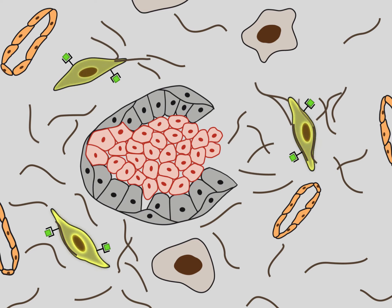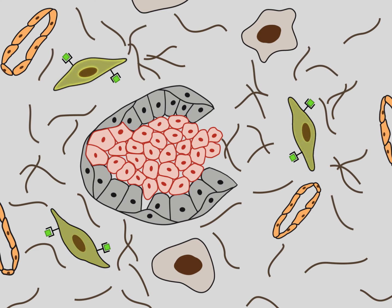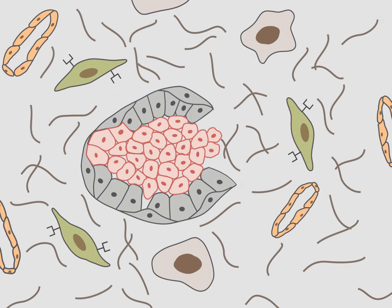Through the stroma run blood vessels that supply the tumor with oxygen and nutrients. TGF-beta also stimulates the release of metalloproteinases, or MMPs.